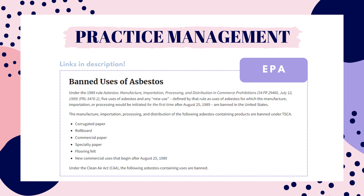Asbestos is still used in many building materials today; however, they must meet acceptable levels as defined by the EPA. One of these products is vinyl flooring. However, the use of asbestos in flooring felt is strictly prohibited by the EPA and should not be specified by an architect. I've put a link in the description to the EPA's website talking about asbestos and different material products and what kind of hazardous materials are allowed in certain things.